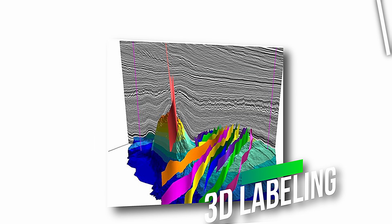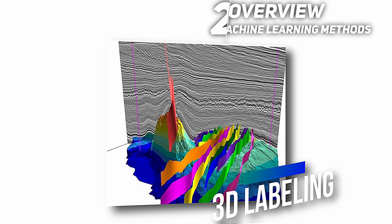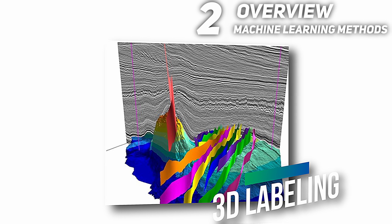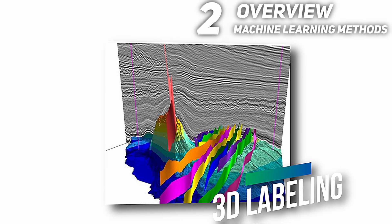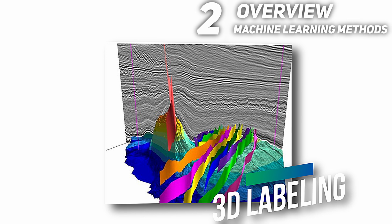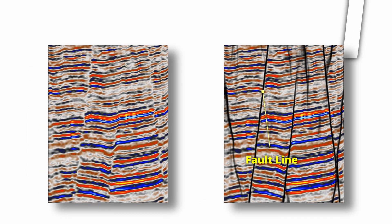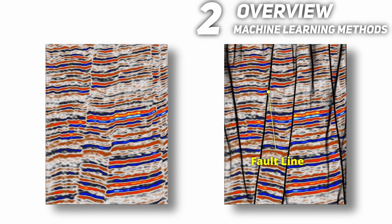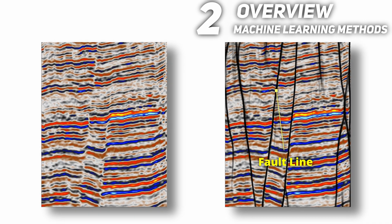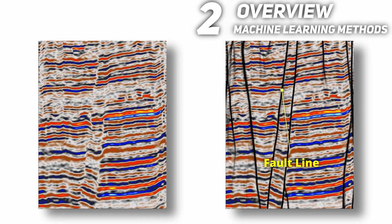Labeling the faults in 3D seismic data is a considerable workload and requires expert knowledge. Aside from the pure time-consuming nature of labeling, which might take several weeks to accomplish, there is one more problem with 3D labeling that I would like to touch on right now — one that makes it easy to divert machine learning methods from the solution.